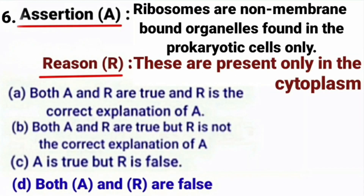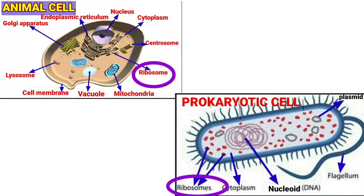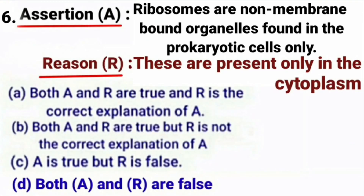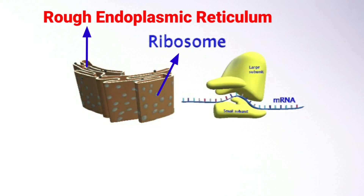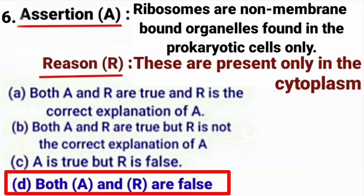Next question. Assertion: Ribosomes are non-membrane-bound organelles found in prokaryotic cells only. Reason: These are present only in the cytoplasm. Ribosomes are non-membrane-bound organelles found in eukaryotic as well as prokaryotic cells, so the assertion is false. Within the cell, ribosomes are found not only in the cytoplasm but also within two organelles — chloroplasts and mitochondria — and are also attached on the rough endoplasmic reticulum. So the statement of reason is also false. The correct answer is option D — both assertion and reason are false.